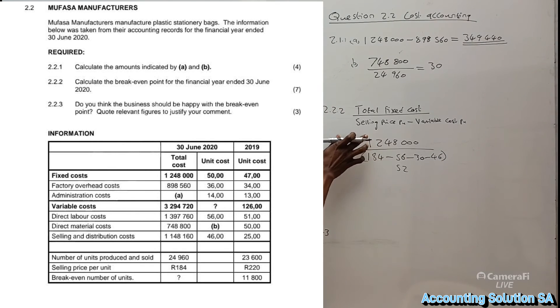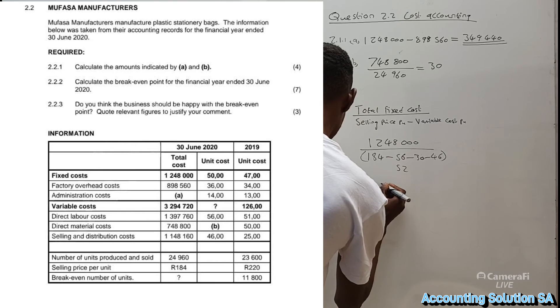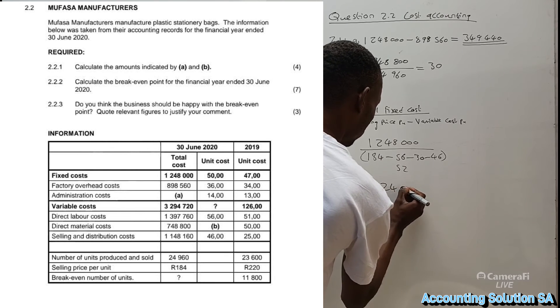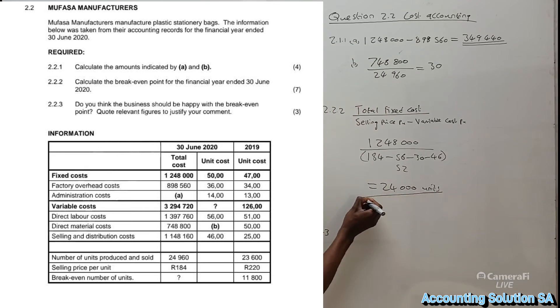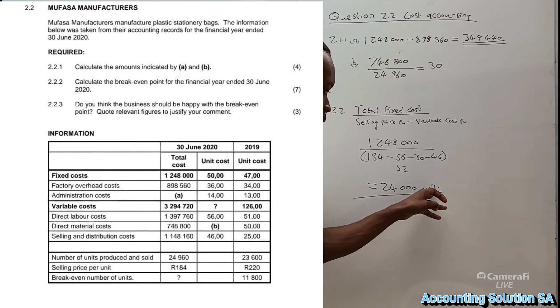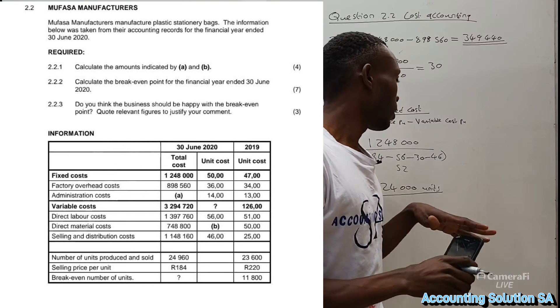You're going to say 1,248,000 divided by 52, then you will get a break-even point of 24,000 units. When you calculate break-even point, make sure that you write that this is units. Once you write rand, you're going to get it wrong. They're not going to give you marks for that.